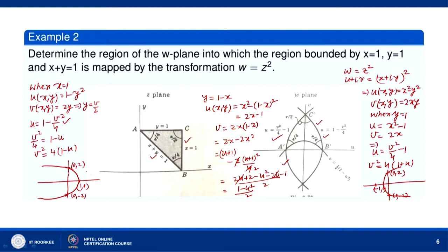This parabola v = (1 - u²)/2 can be rewritten as u² = 1 - 2v. When u = 0, v = 1/2, so this is the point (0, 1/2). If v > 1/2, then u² is negative, so the parabola opens downward. It crosses the u-axis at u = ±1, giving points (1, 0) and (-1, 0).